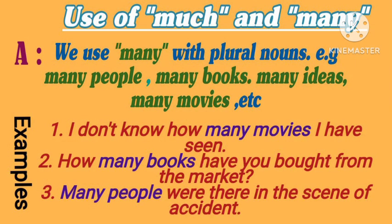On the other hand, we use many with plural nouns. For example: many people, many books, many ideas, many movies, etc. In the above cited examples, people, books, ideas, and movies are countable nouns in plural form. See the examples: 1. I don't know how many movies I have seen. 2. How many books have you bought from the market? 3. Many people were there at the scene of the accident.